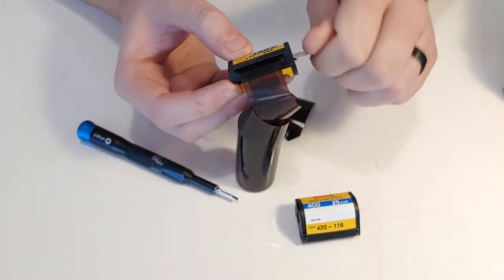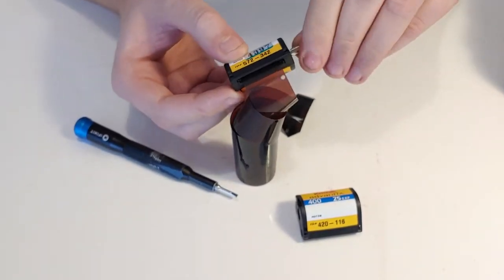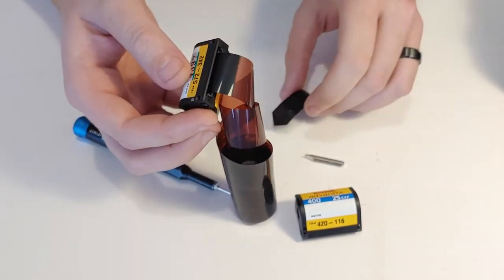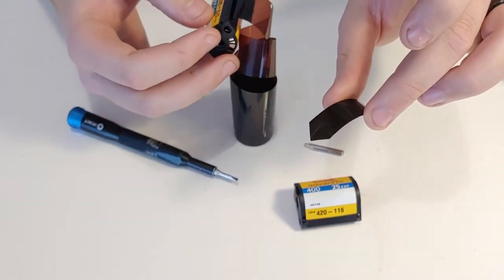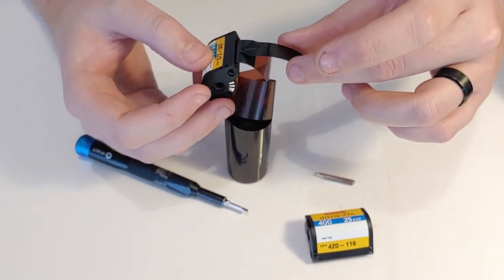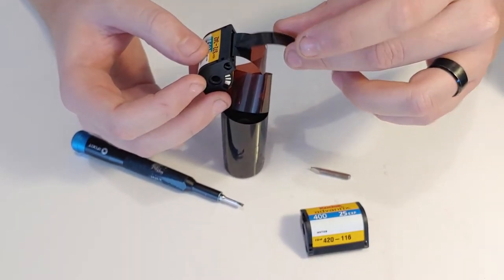At the end, the way that I've been unloading these is by making a little tool that looks like this. This is just a cutoff of a piece of film. It just has to be narrower than the film itself.